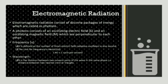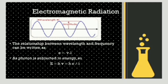When we say UV visible radiation, these are the regions of spectrum that have certain range of wavelengths. The wavelength range of ultraviolet radiation is 190nm to 380nm, and the wavelength range of visible radiation is 380nm to 750nm. The relationship between wavelength and frequency is written as C equals V lambda. As photon is subjected to energy, E equals HV equals HC over lambda. All photons that fall in this range belong to UV visible radiations.